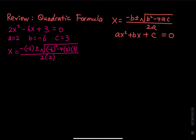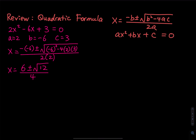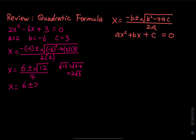2a equals 2 times 2, which is 4. So x equals negative negative 6, which becomes positive 6, plus or minus the square root of 36 minus 24. That's 36 minus 24 — 8 times 3 is 24 — giving us 12. We divide by 2 times 2, which is 4. The square root of 12 equals the square root of 4 times 3, and the square root of 4 is 2, so we have 2 root 3. So x equals 6 plus or minus 2 times the square root of 3, divided by 4.